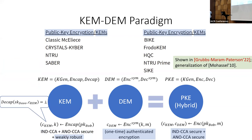Let's try to zoom in on this weak robustness requirement. In our work we also show that not only is this weak robustness requirement sufficient, but it's also somehow necessary, because we constructed an artificial example of a KEM which satisfies IND-CCA security and anonymity but not weak robustness, such that if you compose it with a DEM which is a one-time authenticated encryption scheme, the resulting PKE scheme does not satisfy anonymity — and the counter-example holds no matter how clever or strong you make your DEM. So this shows that weak robustness is necessary and sufficient.